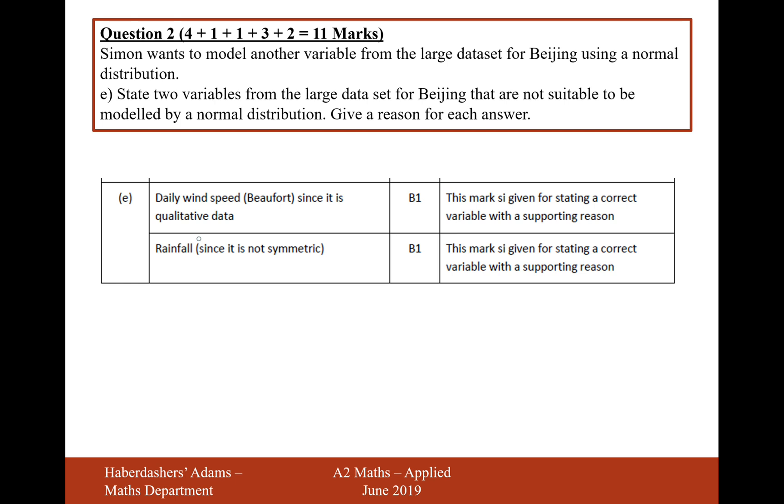So let's see what the mark scheme says. Just remember that Beijing has a reduced amount of variables on the large data set. It doesn't have all of those same variables that the UK towns and cities do. So we have to bear in mind that Beijing has a smaller amount of variables and remember what those variables are.